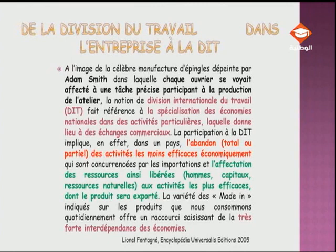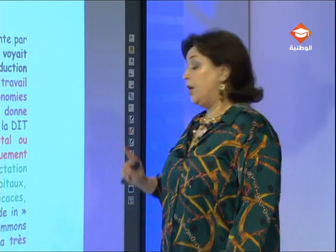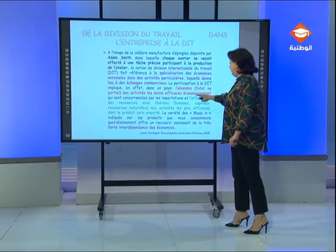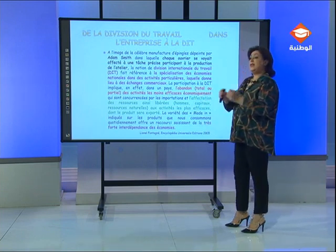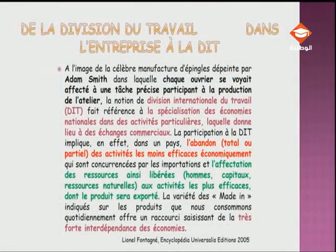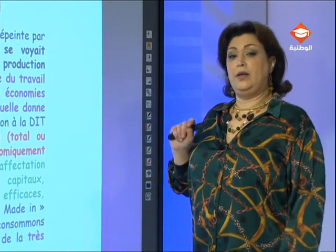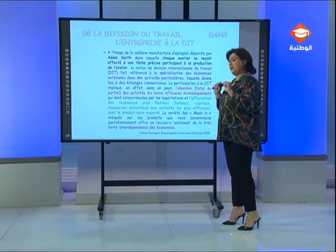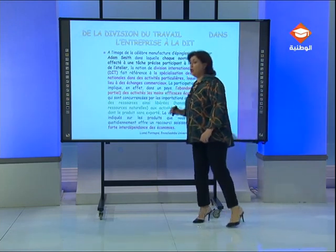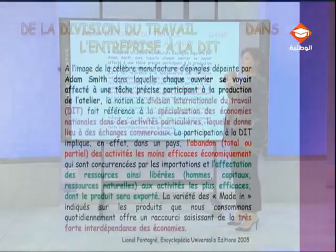Dans le commerce interbranche, on a déjà vu la notion de dotation factorielle, et on fait référence à cette notion. Chaque pays, selon ce dont il dispose en ressources humaines, en capitaux et en ressources naturelles, va décider d'affecter ces ressources dans la production et la spécialisation d'un produit en particulier. En contrepartie, s'il voit qu'il ne dispose pas de certaines ressources ou que certaines activités sont moins efficaces économiquement pour lui, il va décider d'abandonner ce type d'activité — abandon partiel ou total. C'est sur cette base que chaque pays va avoir une spécialisation particulière.